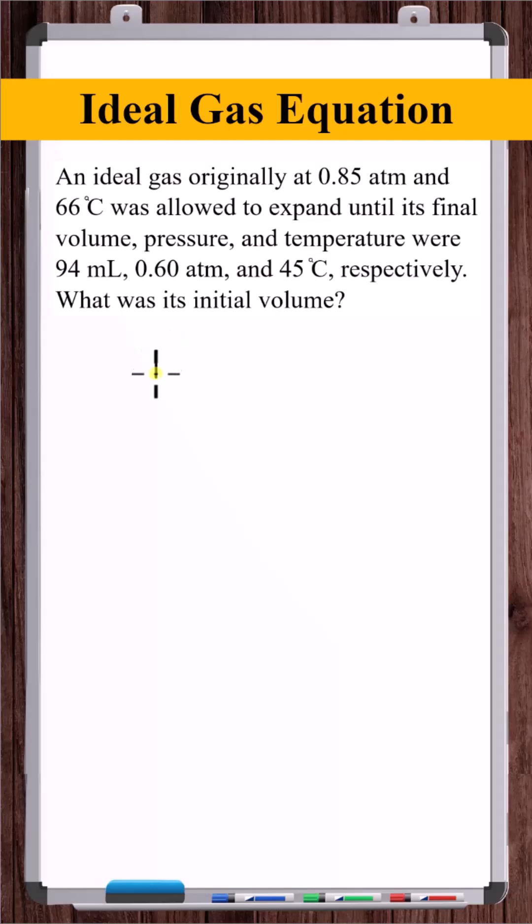So this is an ideal gas, meaning for any state the gas is in, it obeys the ideal gas equation. Initially, state one, the gas was at 0.85 atmospheres pressure, 66 plus 273, 339 Kelvin. It expanded until it got to a second state,